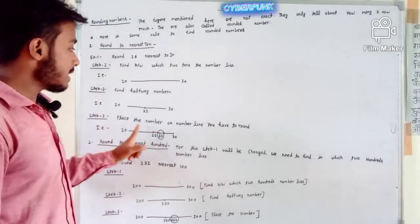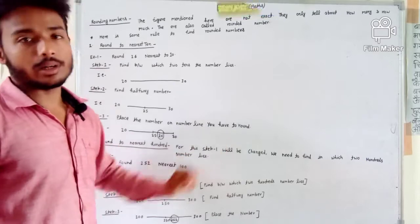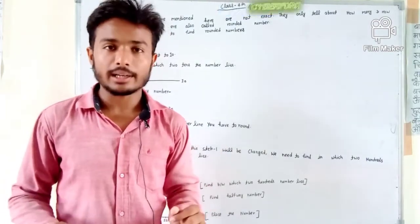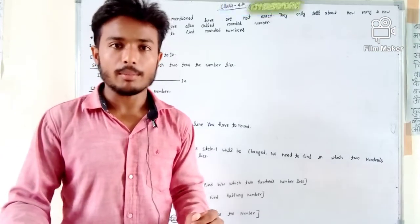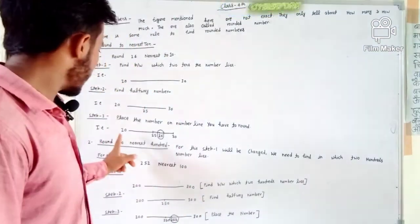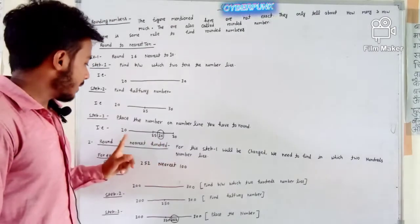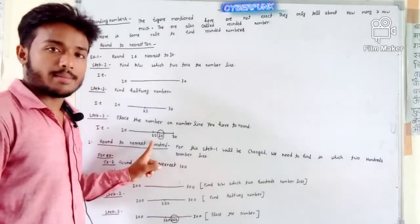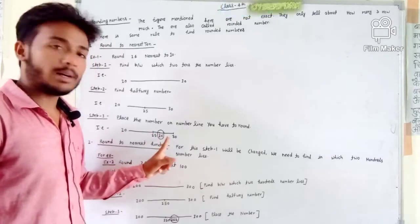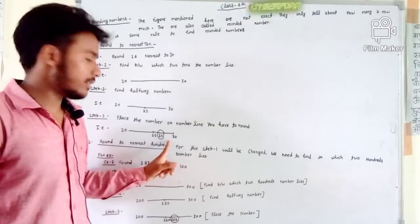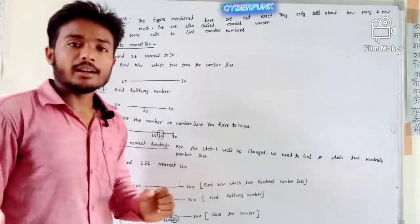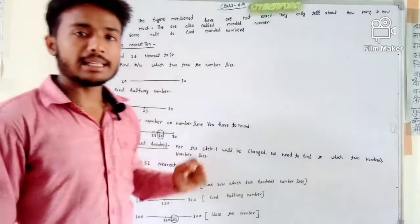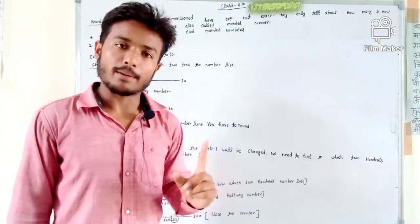Step 3 is to place the number on the number line. Here on the number line, we have the two tens which are 20 and 30, half of them is 25, and now we place the number to be rounded, which is 26. So 26 is the nearest number rounded to 30. This is the first rule.